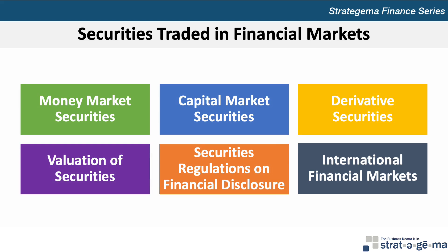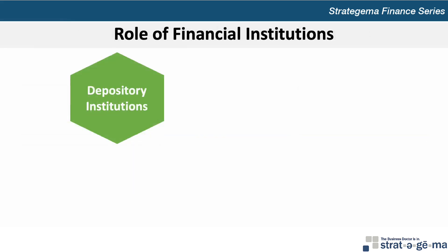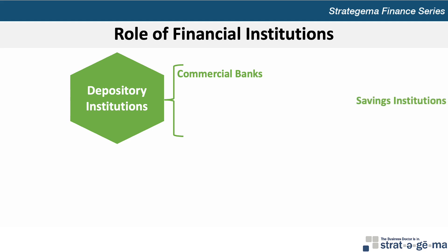Now let's move on to the role of financial institutions, starting with the role of depository institutions, which accept deposits from surplus units and provide credit to deficit units through loans and purchases of securities. Depository institutions include commercial banks, savings institutions, and credit unions.